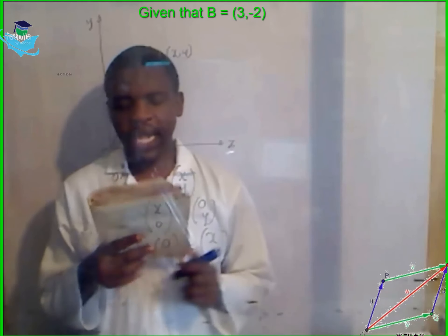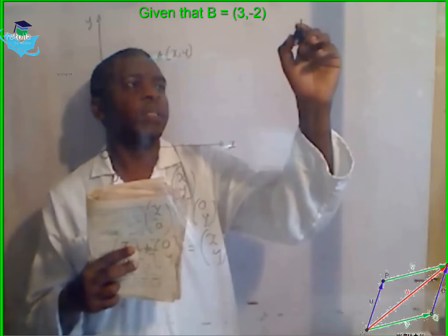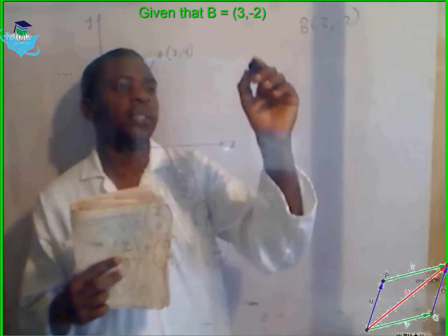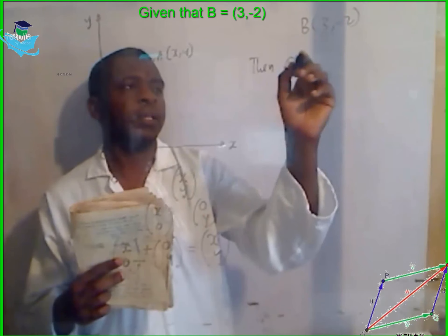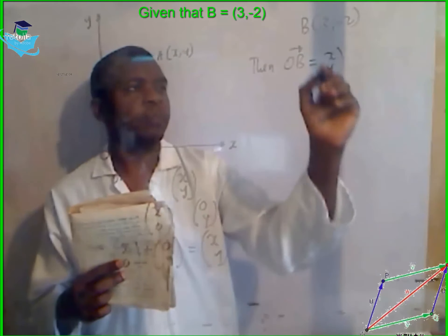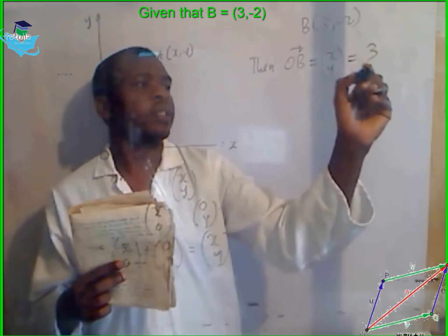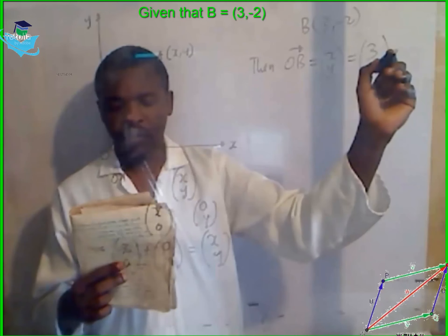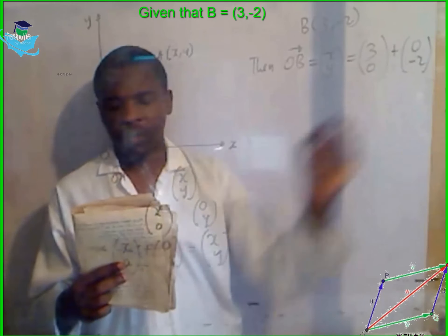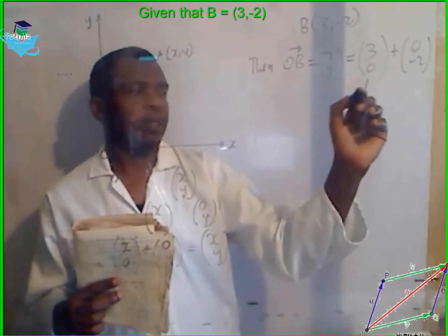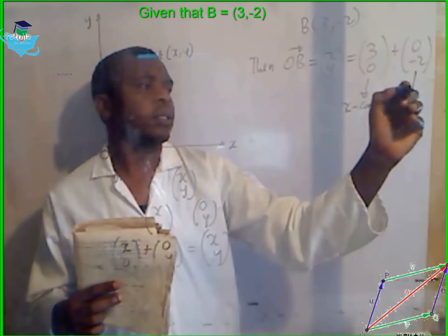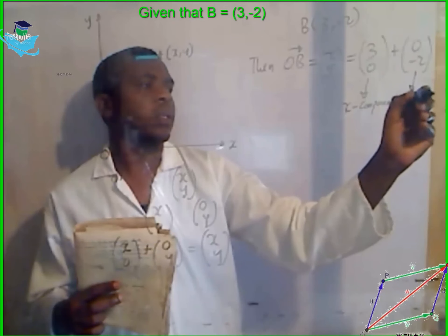Example: given that B has components 3, -2, then the position vector OB will be equal to x, y, which equals 3, 0 plus 0, -2. This is the x-component, and this is the y-component. Thank you.